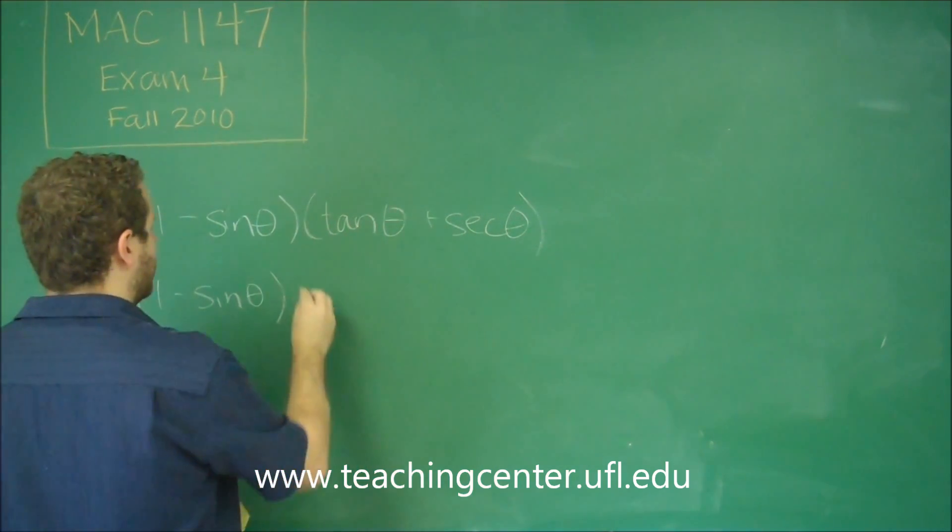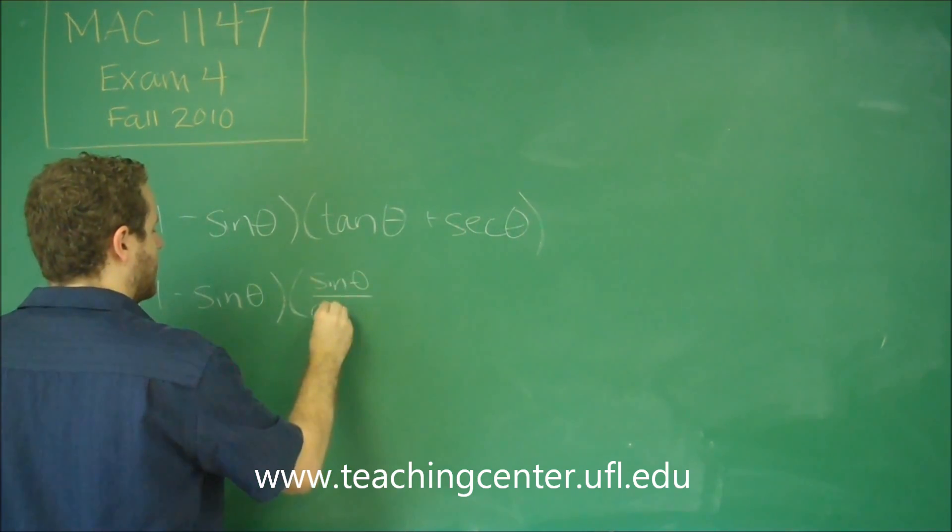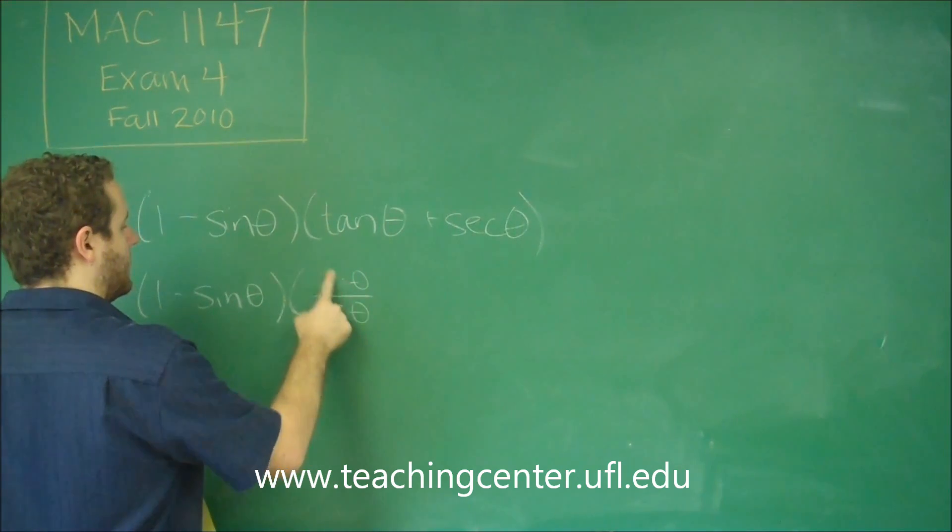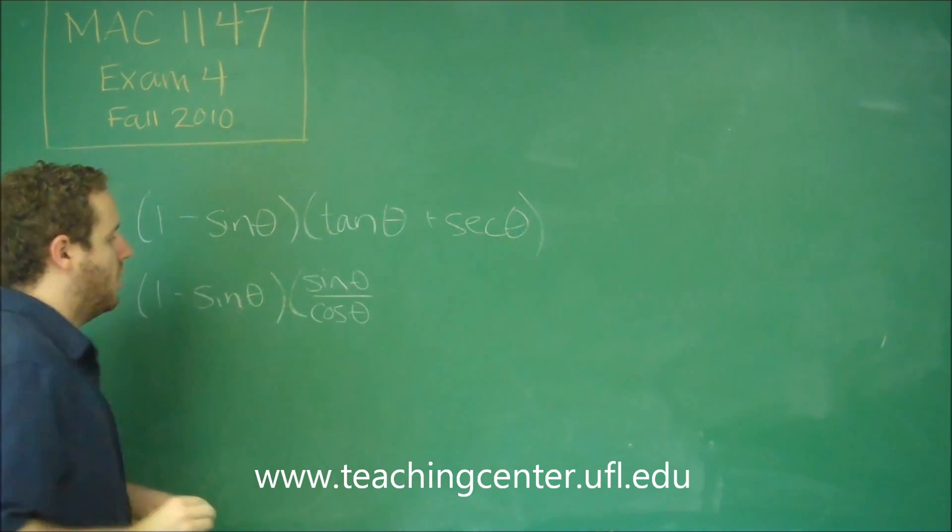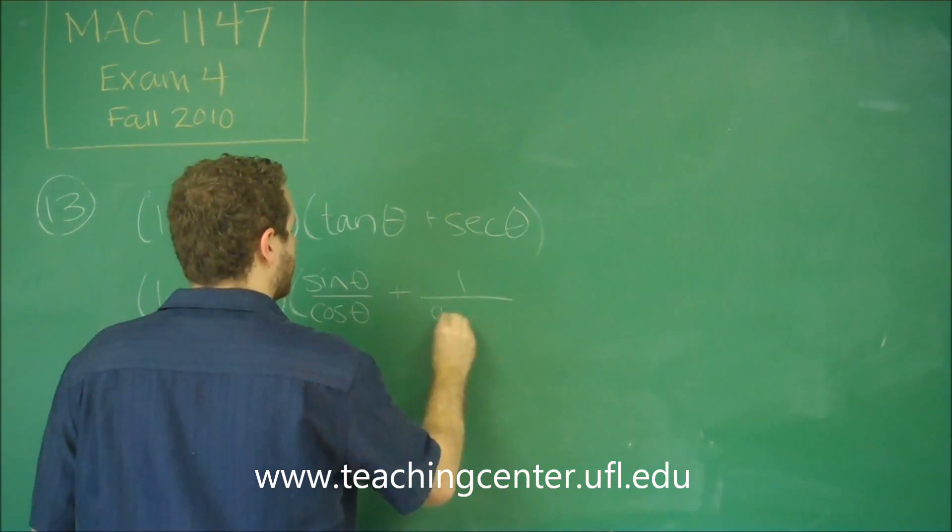So we have 1 minus sine theta. Tangent is sine theta over cosine theta. Let me clear that up here. Sine theta over cosine theta. And secant theta is 1 over cosine theta.